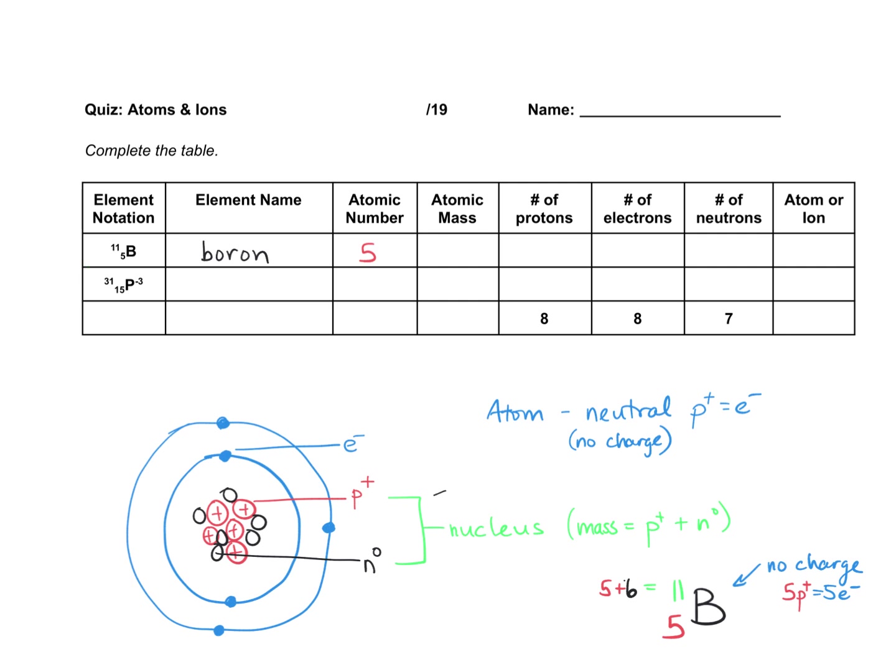Then the mass. The mass is the 11, which we, again, realize is the protons and the neutrons. So atomic number tells me the number of protons. So I'll color code that. So I knew I knew this because of this. Because it was here. There's the atomic number.